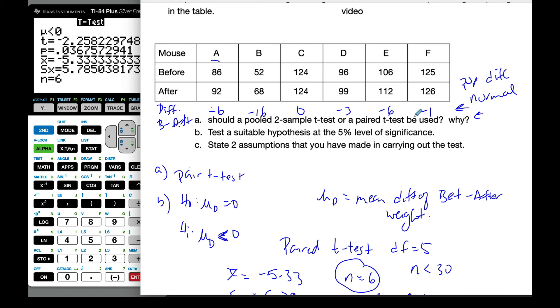The second assumption I have to make is that mouse A and mouse B and so on are independent of each other. This might be true. It might not be true. We don't have enough information. So those are two assumptions that I'm carrying out. They're big assumptions in this case, so I don't actually know I should be doing this test.